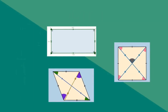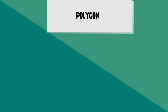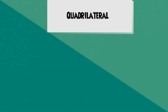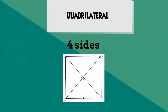Each of these are plain two-dimensional shapes. Let's look at some of the properties of each of these shapes. Each of these shapes are considered to be a polygon, which is a closed figure composed of line segments. They also are considered to be quadrilaterals, which means they each have four sides.